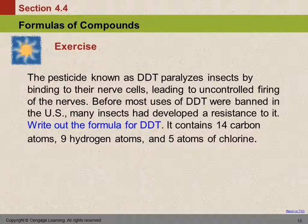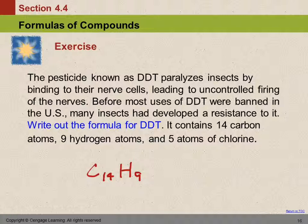They're giving the atoms to us in a particular order, so we'll use the same order. Carbon's symbol is capital C, and it says 14, so we write 14 as a subscript after the carbon. The symbol for hydrogen is capital H, and there are 9 hydrogen atoms, so we put a 9 there. Chlorine — we'll write it out — and it says 5. So that is the formula for DDT.